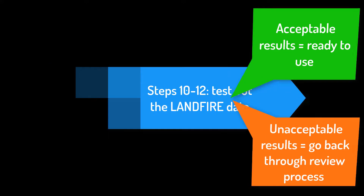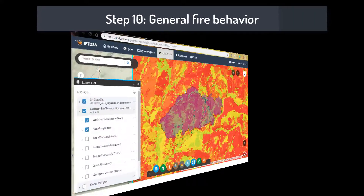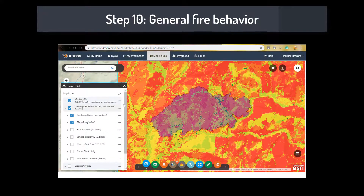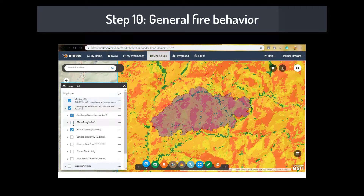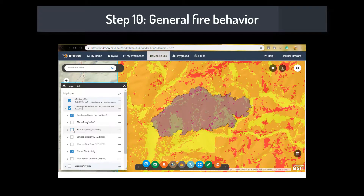Step 10: General fire behavior. Compare modeled fire behavior outputs to observed or expected fire behavior across the site. Start with non-burnable areas and then move to areas where you would expect moderate to high fire behavior.